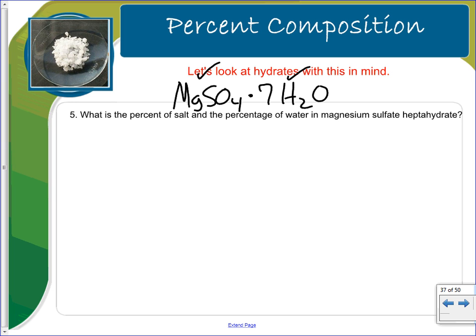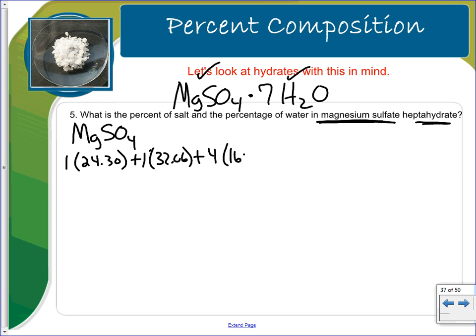So there's so many different ways to work this. What I'm going to do is find the mass of my salt and my mass of my water. When I say the salt, I'm talking about this part here. The water, I'm talking about this part. So I'm going to take the magnesium sulfate and I'm going to find out the mass of it. We have one magnesium plus one sulfur and we have four oxygen. And so the molar mass of the magnesium sulfate is 120.36 grams of magnesium sulfate.